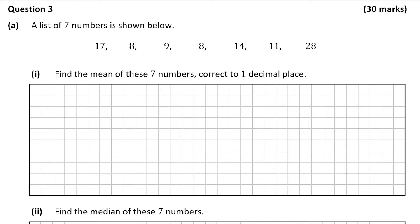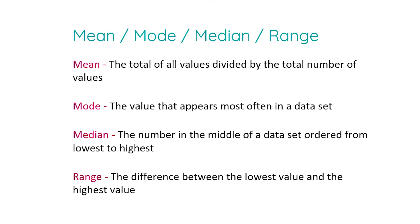So we're shown 7 numbers and we're asked to work out the mean of these 7 numbers. Before we do this, let's remind ourselves of the definition of mean, mode, median, and range — you often see these come up in the same question. The mean is the total of all the values divided by the total number of values. The mode is the value that appears most often. The median is the number in the middle when the set is ordered from lowest to highest. And the range is the difference between the lowest value and the highest value.